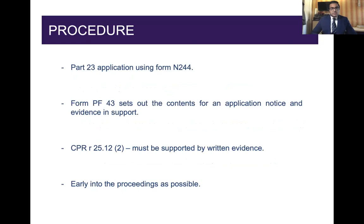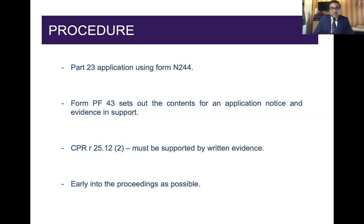In terms of procedure, the approach is to use the usual Part 23 application form N244. However, there is a form called PF43 which sets out the contents required within an application notice and the written evidence in support. Rule 25.12 states that any application for security for costs must be supported by written evidence. Form PF43 sets out that the claimant gives security for the defendant's costs of proceedings up to a specified stage in a specified sum, allows for asking the court for a stay on proceedings until security is given, and if security is not given, provision for an unless order — so if the claimant breaches that order, the claim be struck out and judgment entered for the defendant.